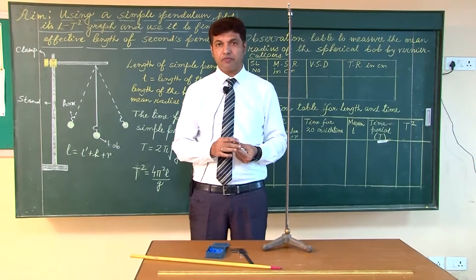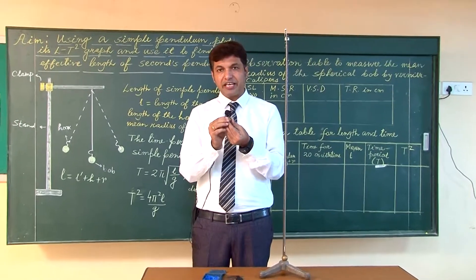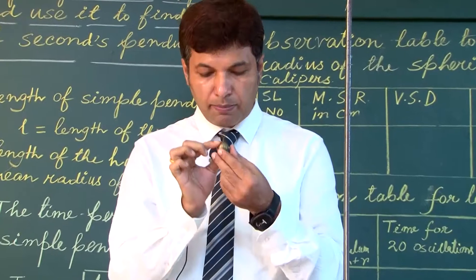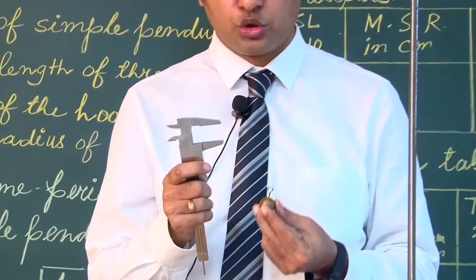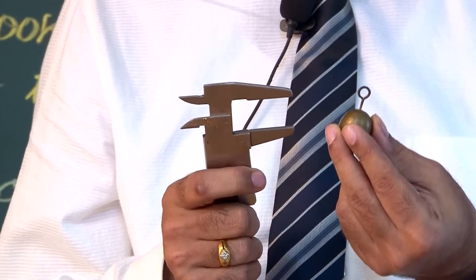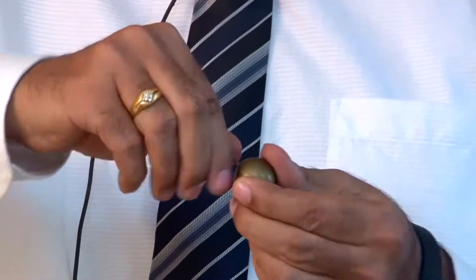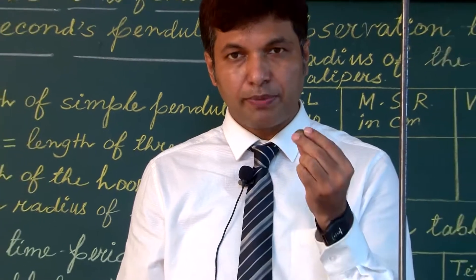To perform the experiment, first we have to measure the mean radius of this pendulum. The mean radius can be measured with the help of vernier calipers. With vernier calipers we can measure the mean radius of the pendulum, and we also have to measure the length of this hook.